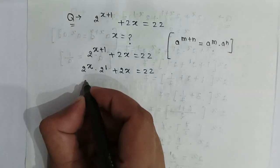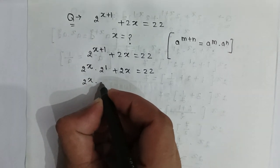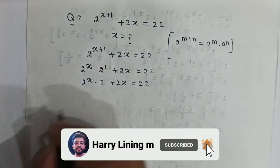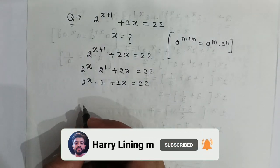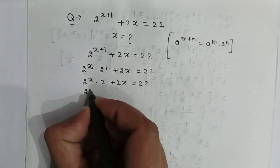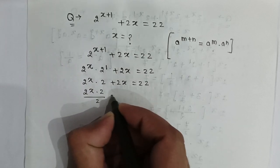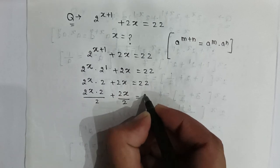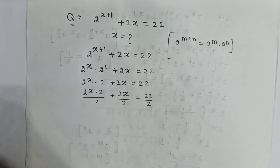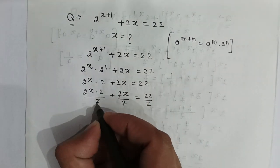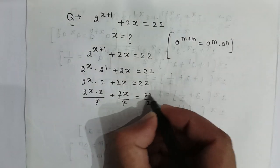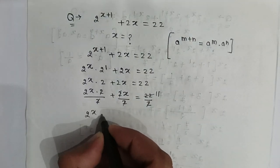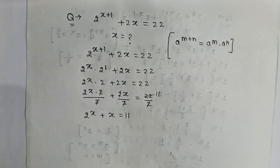So it will be 2 to the power x multiplied by 2, plus 2x, is equal to 22. If we divide all terms by 2, then it will be 2 to the power x multiplied by 2 divided by 2, plus 2x divided by 2, is equal to 22 divided by 2. The 2s cancel out, so it becomes 2 to the power x plus x is equal to 11.